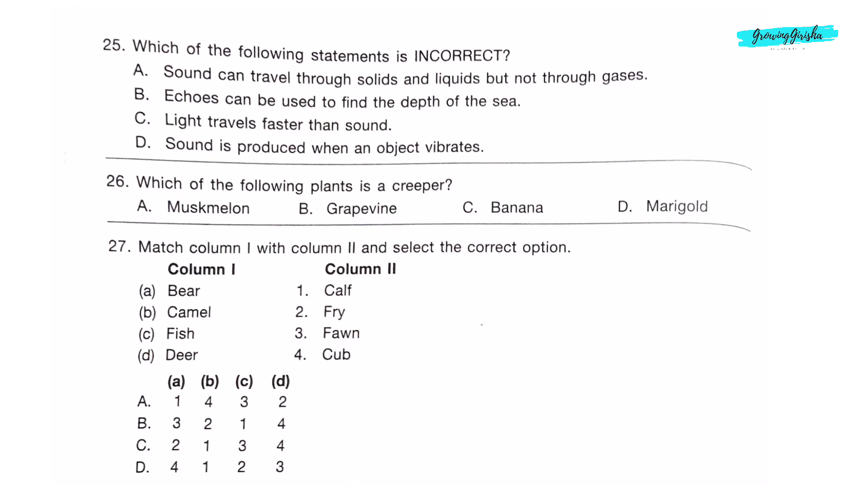Question 25: Which of the following statements is incorrect? Sound can travel through solids and liquids but not through gases. This statement is incorrect. Sound can travel through solids and liquids and it can also travel through gases. So option A is the correct answer. Question 26: Which of the following plants is a creeper? Muskmelon. Grapevine is climber, banana is herb, and marigold is a shrub.